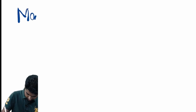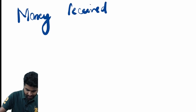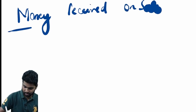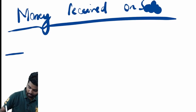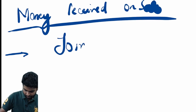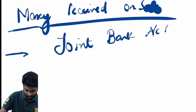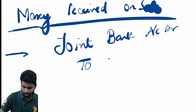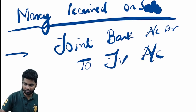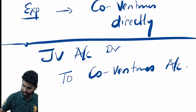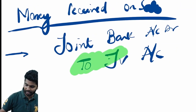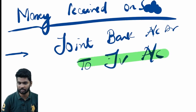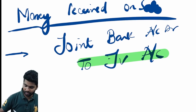If money is received on sale, it will be: joint bank account debit to JV account. So for all expenses we debit the JV account, and for all incomes we credit the JV account. There is no separate purchase or sale account — everything is captured in the JV account. Finally you find out the profit by closing the JV account, and whatever profit or loss there is will be shared between all the co-venturers' accounts.